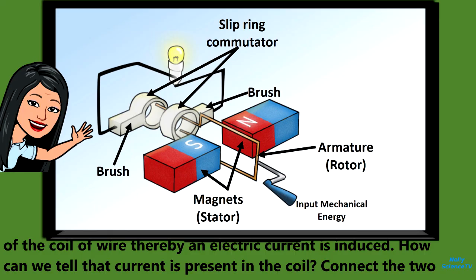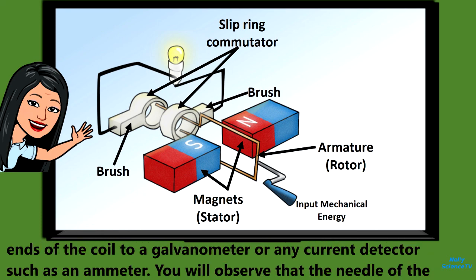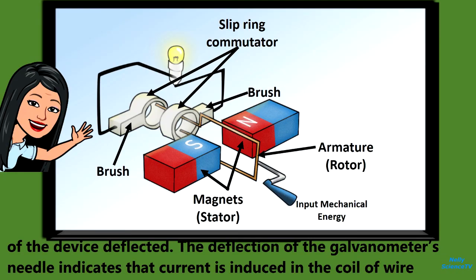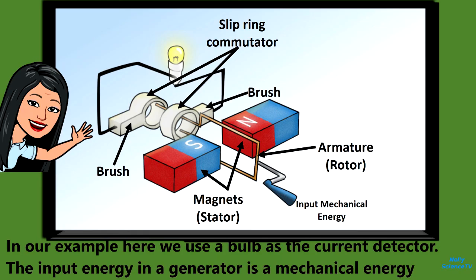How can we tell that current is present in the coil? Connect the two ends of the coil to a galvanometer, or any current detector such as an ammeter. You will observe that the needle of the device deflects. The deflection of the galvanometer's needle indicates that current is induced in the coil of wire. In our example here, we use a bulb as the current detector.